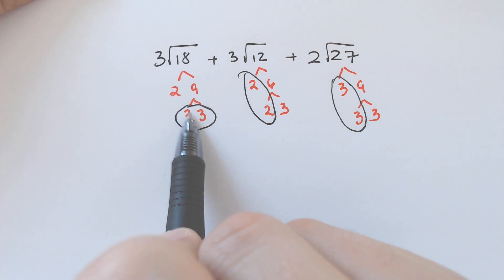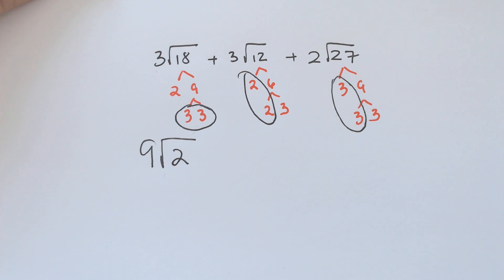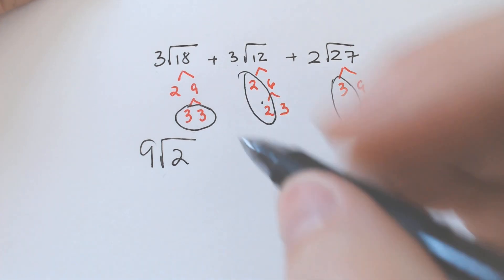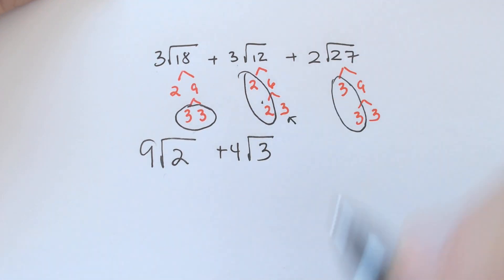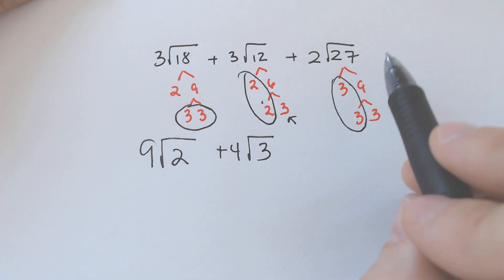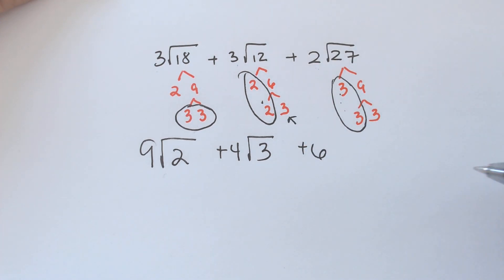This 3 will multiply with this 3 to make 9 square root of 2 left over. This 2 will multiply with this 3 to make 4 square root of this 3 left over. This 3 would multiply with this 2 to make 6 square root of 3 left over.